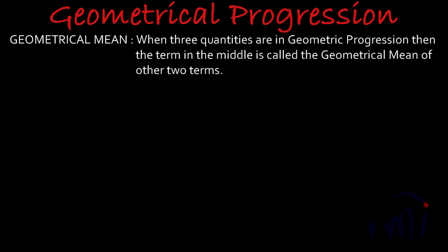Let's read the definition of geometrical mean. The definition says: when three quantities are in geometric progression, then the term in the middle is called the geometrical mean of the other two terms. So suppose we have three terms A, B, and C. If these three terms are in geometrical progression, then B is called the geometrical mean.